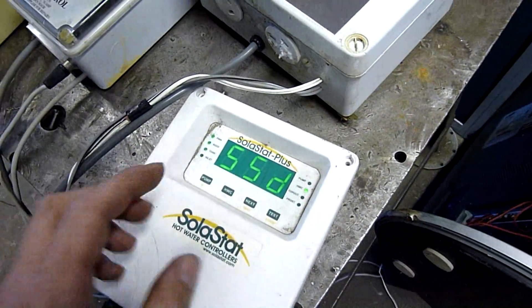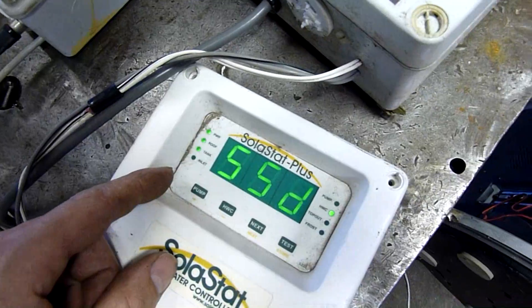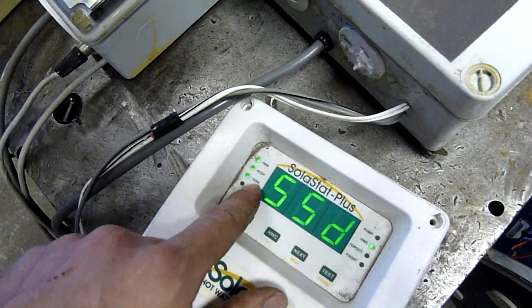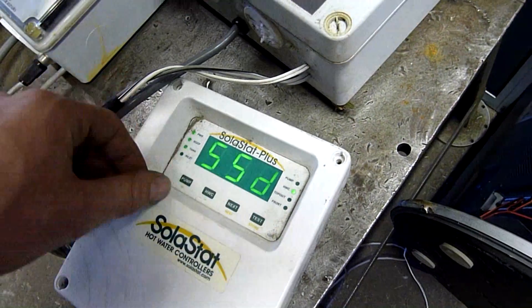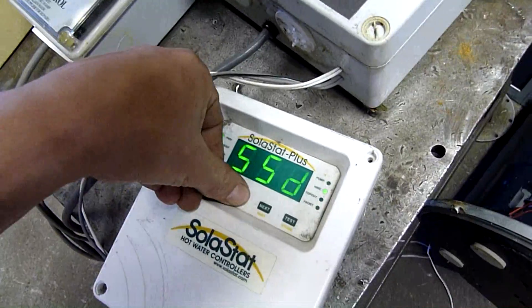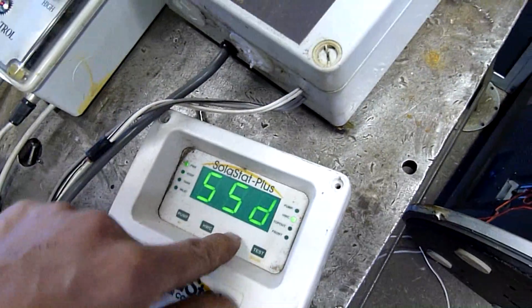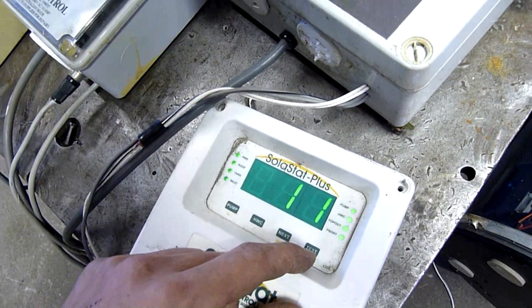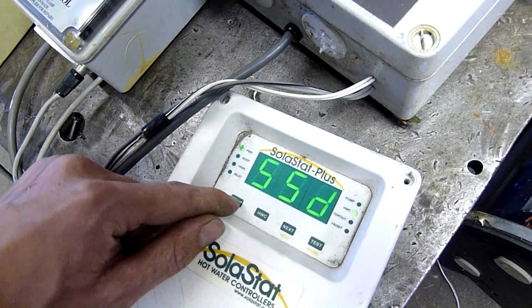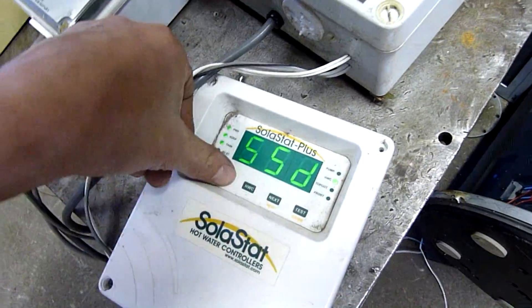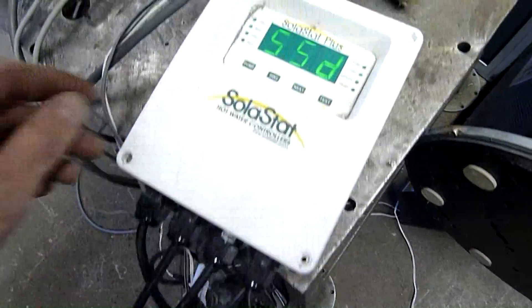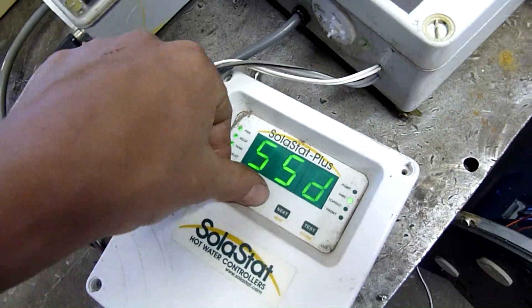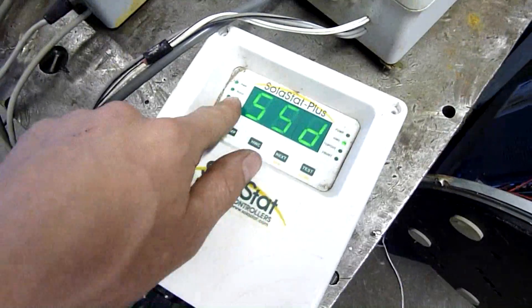This one here, what's it telling me? HWC is alright. That's probably indicating the roof and tank thermocouples are open circuit. So let's go HWC. Nope. Next. Test. Okay, pump relay works. I'm going to turn the pump on if it was connected. Next.